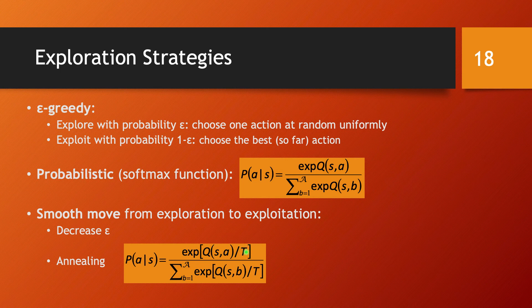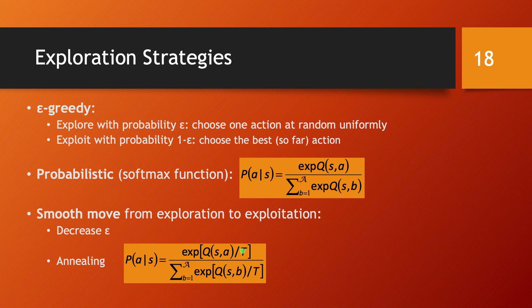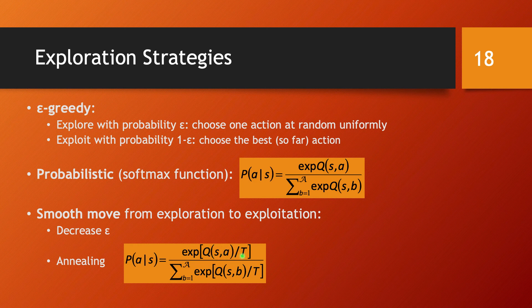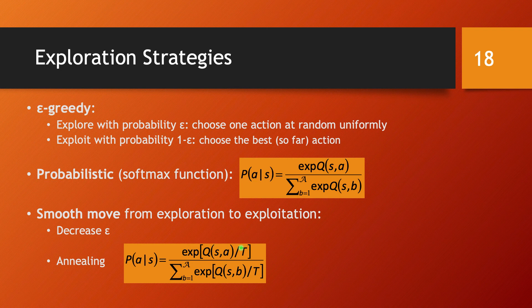And this temperature parameter is passed on to the softmax function in the exponent in this way. It's going to be a division of the internal rewards to this temperature variable.